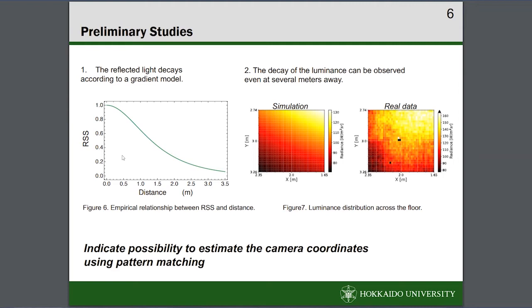We describe two preliminary studies we conducted before developing the proposed methodology. The first is that, assuming a third floor, the reflected light decayed according to a gradient model for the peak just below the LED. Our previous work have shown that the decay of the reflected light on the Lambertian floor surface can be approximated by the hyperbolic second distribution of two-dimensional distance between camera and LED.